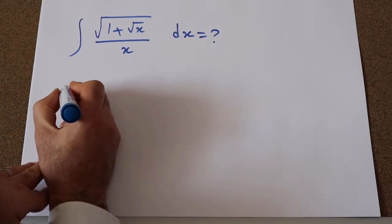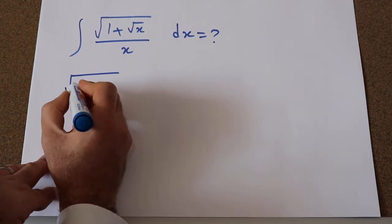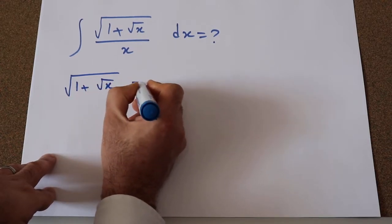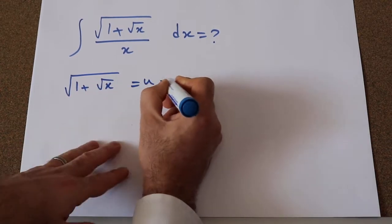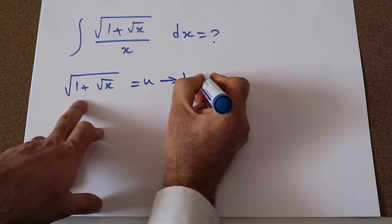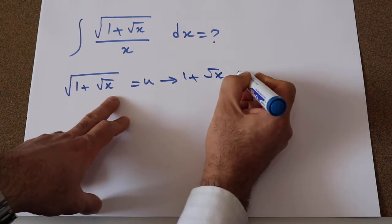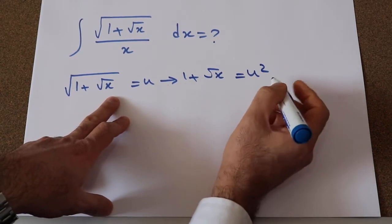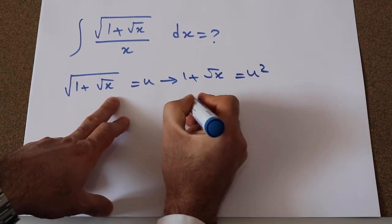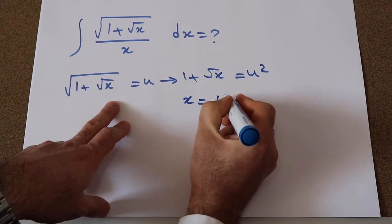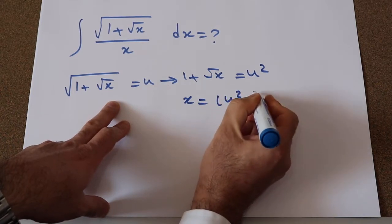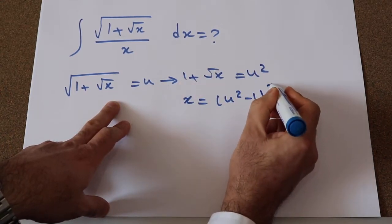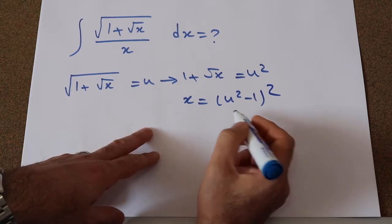To solve this integral, I define square root of 1 plus square root of x as u. Therefore, 1 plus square root of x will be equal to u squared. Therefore, x will be equal to (u squared minus 1) squared — I bring 1 to the other side of the equation with the power of 2.